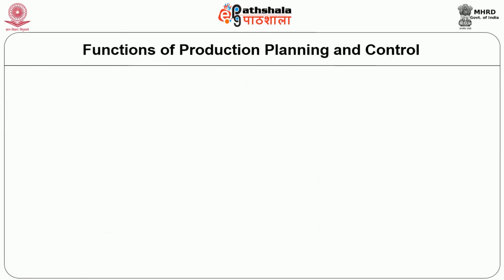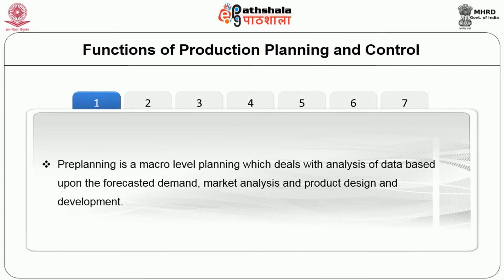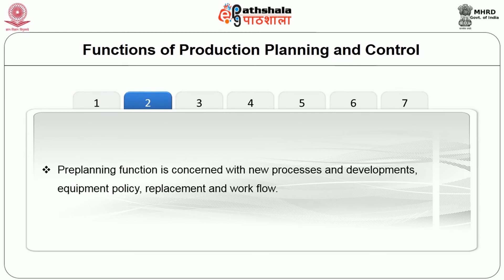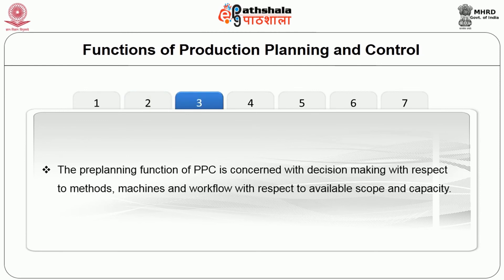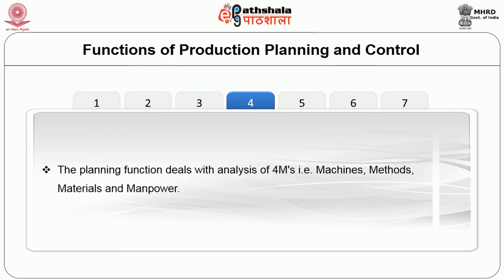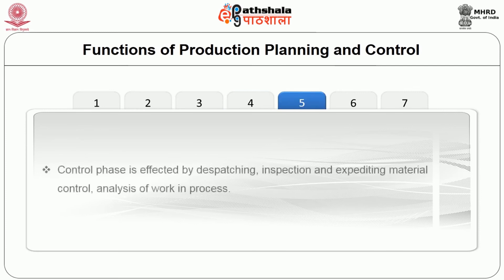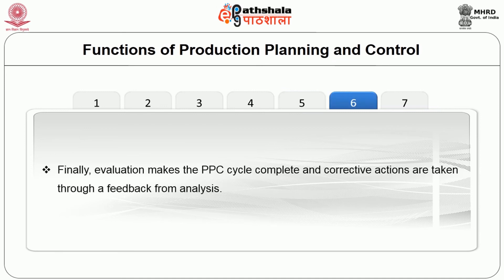Functions of production planning and control. Pre-planning is a macro-level planning which deals with analysis of data based upon forecasted demand, market analysis, and product design and development. Pre-planning is concerned with new processes and developments, equipment policy, replacement, and workflow. The pre-planning function is concerned with decision making with respect to methods, machines, and workflow with respect to available scope and capacity. The planning function deals with analysis of the 4Ms — that is, machines, methods, materials, and manpower. The control phase is effected by dispatching, inspection, and expediting material control, and analysis of work in process. Finally, evaluation makes the production planning and control cycle complete and corrective actions are taken through feedback from analysis. Good communication and feedback is essential to enhance and ensure effectiveness of production planning and control.